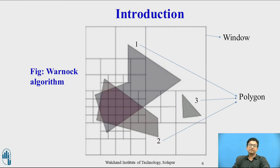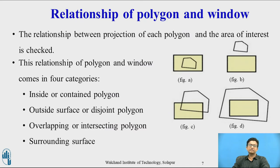This relationship can be given with four categories: the polygon is contained or inside the window, disjoint polygon, overlapping polygon, and surrounding surface. An inside polygon is one which is completely inside the area of interest. The shaded part you can see in the diagram is the area of interest.